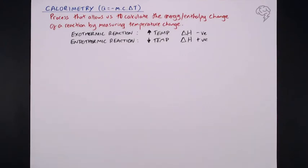For exothermic reactions, we observe an increase in temperature. We would measure an increase in temperature in the surroundings if an exothermic reaction was taking place. What does that mean for delta H? Well, that means that delta H has a negative value. Energy has been lost from the chemical system.